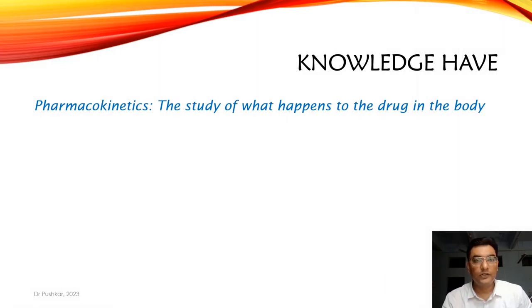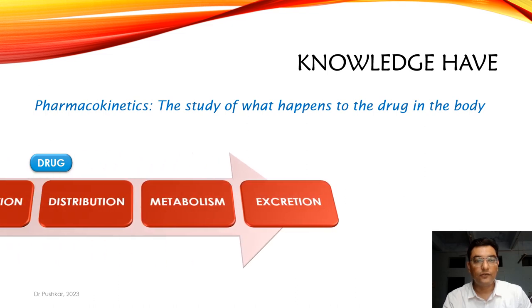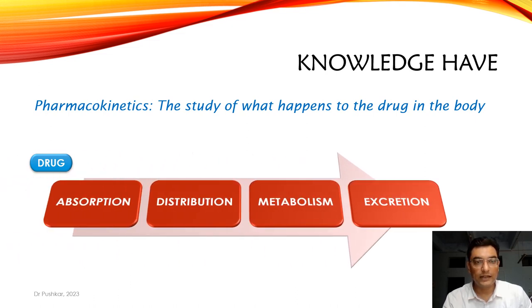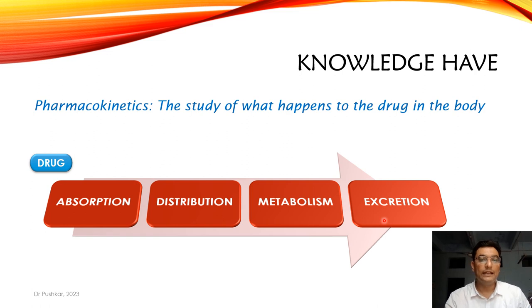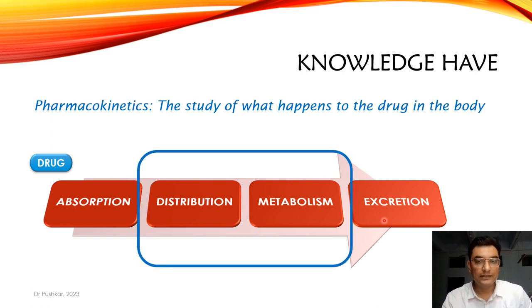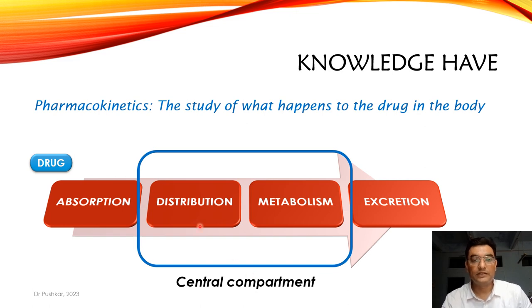Pharmacokinetics is the study of what happens to the drug in the body. There are four processes involved: absorption, distribution, metabolism, and excretion — ADME. After absorption, in the central compartment (our body), the drug will distribute as well as metabolize, and after that it will be excreted out from the body.